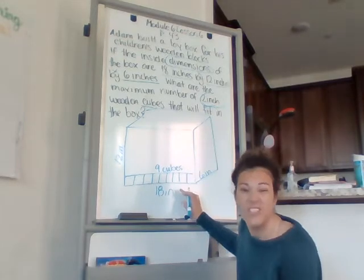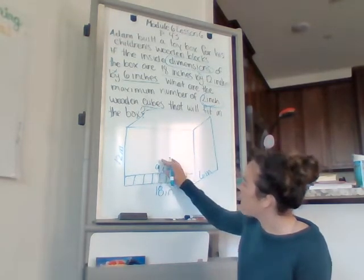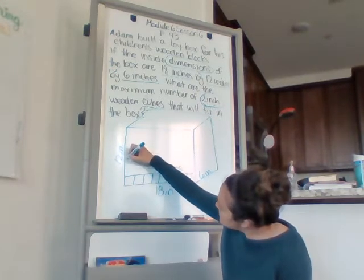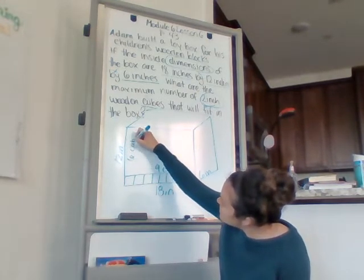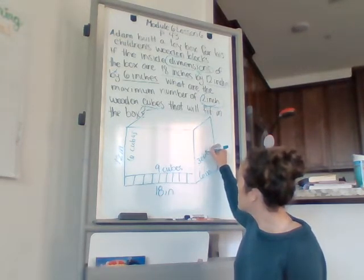We can draw it, or just do our math. So 18 divided by 2 is 9. 12 divided by 2 is 6 cubes will go here. And 6 divided by 2, 3 cubes will go here.